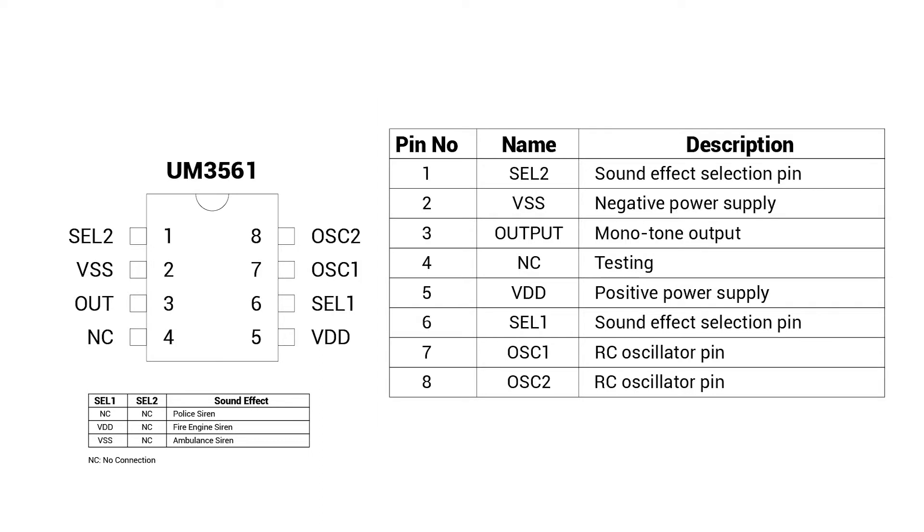The UM 3561 is a low-cost, low-power integrated circuit that has eight pins. Pins 1 and 6 are used to select the siren tune, pins 2 and 5 are the power supply pins, pin 3 is the output pin, pins 7 and 8 are used to configure the oscillating frequency, and finally pin 4 is not connected to anything.